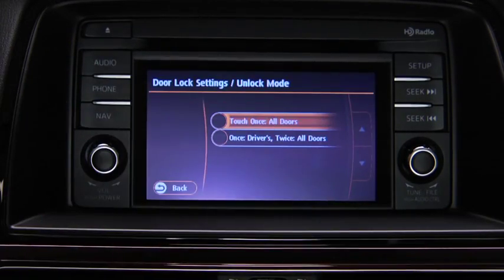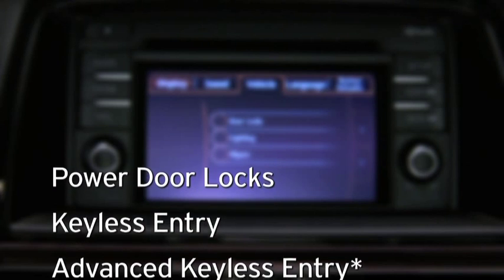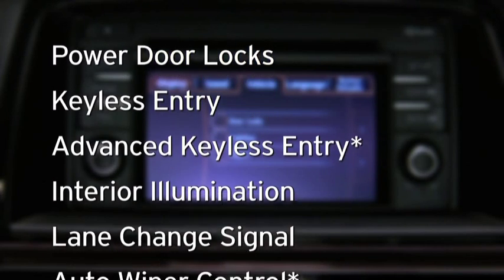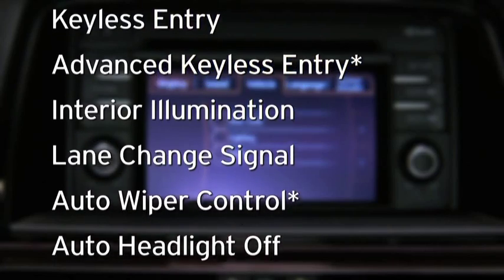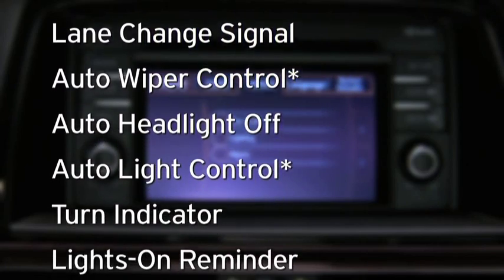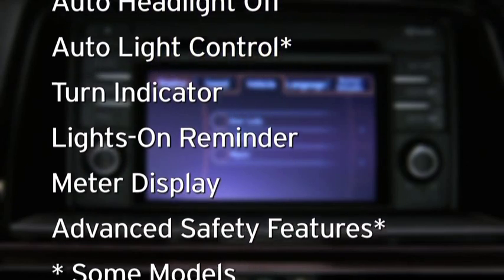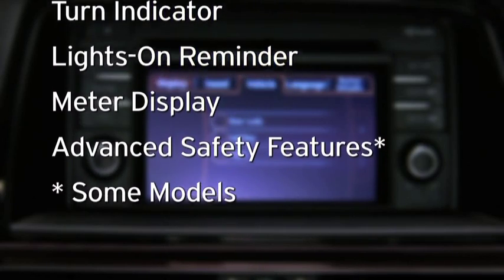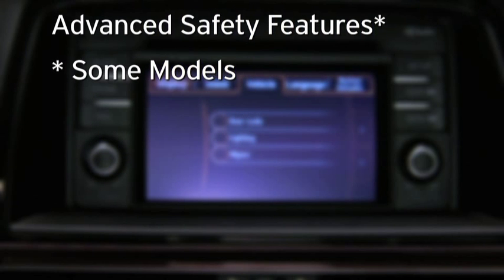You can adjust settings for power door locks, keyless or advanced keyless entry, interior illumination, lane change signal, auto wiper control, auto headlight off, auto light control, turn indicator, lights on reminder, meter display, and advanced safety features.